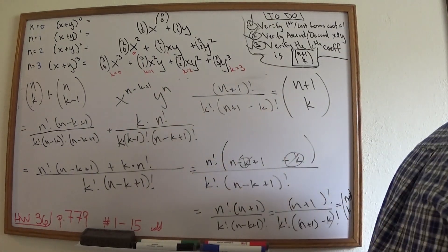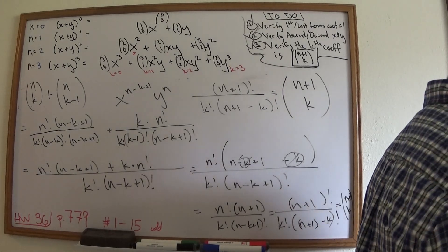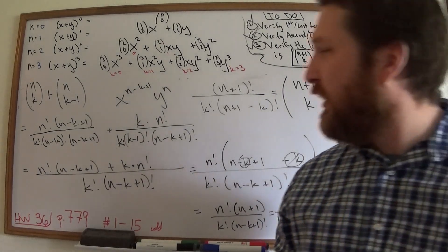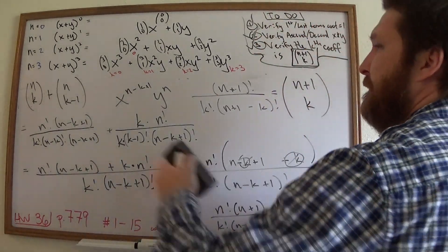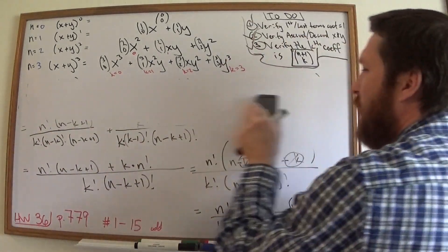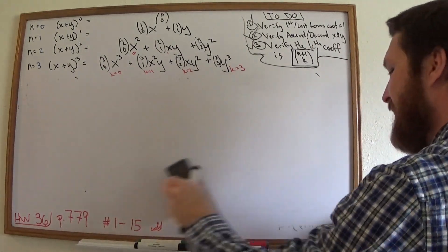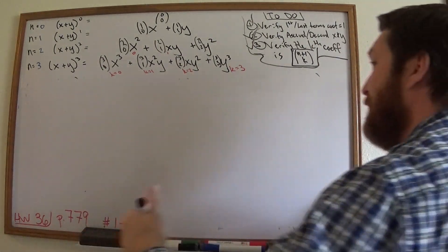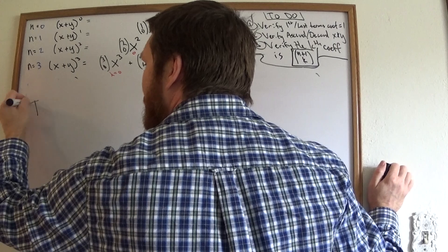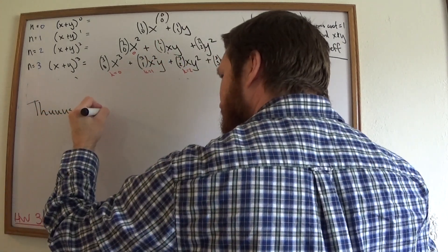We've verified all three things: the ascending/descending powers, the first and last coefficients equal 1, and the k-th coefficient equals C(n+1,k). Therefore, the binomial theorem is proved by induction. I want you to commit this to memory for the rest of your lives.